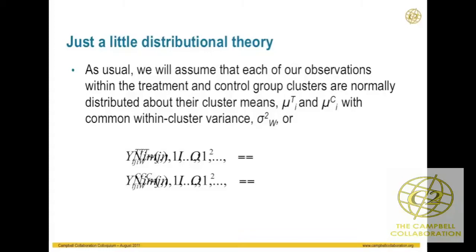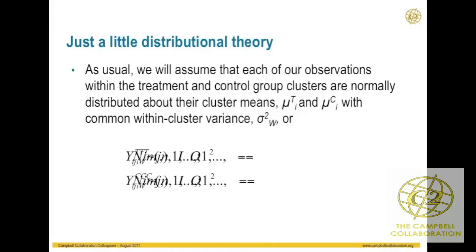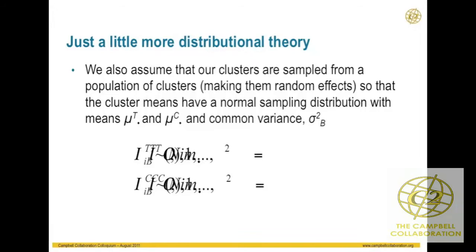We assume, as we always do, that every observation within the treatment and control group is normally distributed with a mean mu distributed around its cluster mean mu-sub-i-t, with equal within-group variance sigma-squared-W. Our cluster means themselves also come from a distribution — normally distributed about the grand mean of the treatment or control group — with variance equal to the between-group variation, sigma-squared-B.